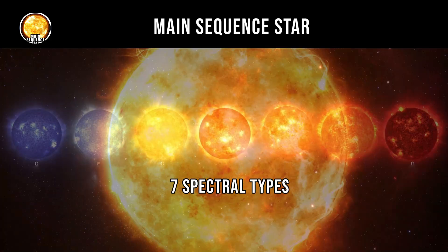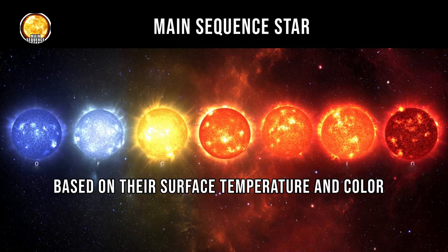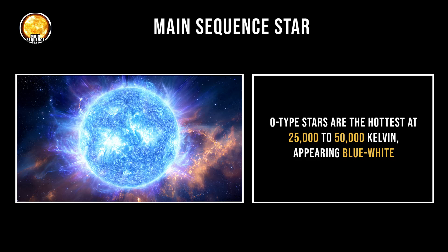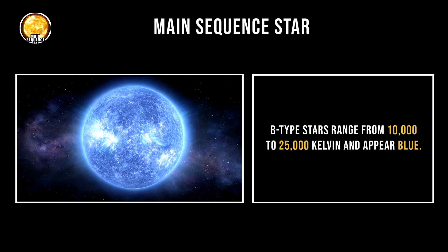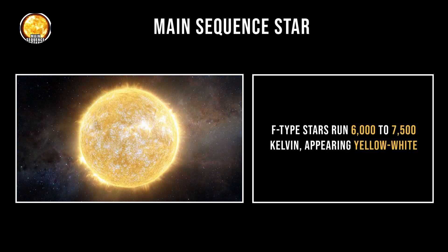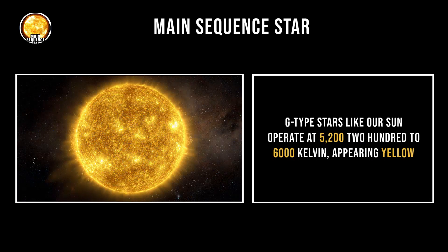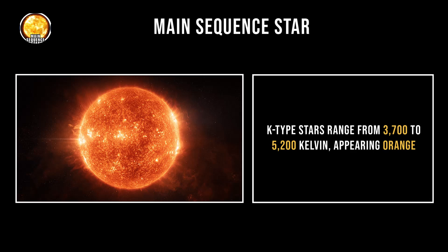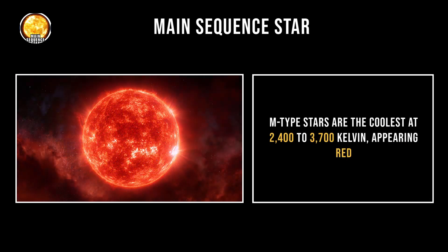Main sequence stars are classified into seven spectral types based on their surface temperature and color. O-type stars are the hottest at 25,000 to 50,000 Kelvin, appearing blue-white. B-type stars range from 10,000 to 25,000 Kelvin and appear blue. A-type stars operate between 7,500 to 10,000 Kelvin, appearing white. F-type stars run 6,000 to 7,500 Kelvin, appearing yellow-white. G-type stars, like our sun, operate at 5,200 to 6,000 Kelvin, appearing yellow. K-type stars range from 3,700 to 5,200 Kelvin, appearing orange. M-type stars are the coolest at 2,400 to 3,700 Kelvin, appearing red.